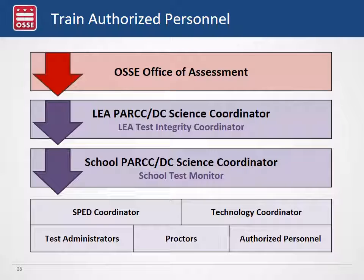Authorized personnel need to be trained at the school level. OSCE uses a train-the-trainer model: OSCE trains LEA test coordinators, who train school test coordinators, who then train all staff at the school including all roles discussed. Training should include test security information and administrative information so that everyone understands how the manuals work and is ready to give the assessment securely and with all necessary details.